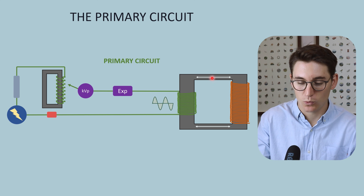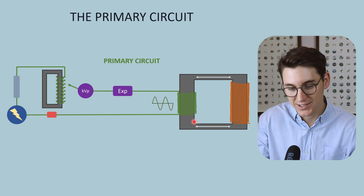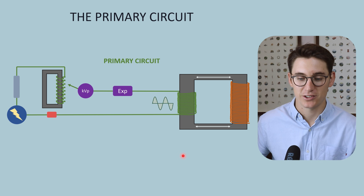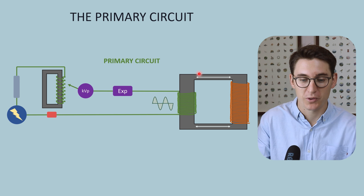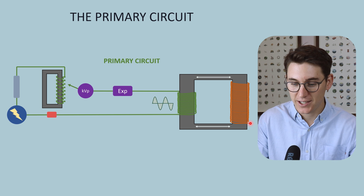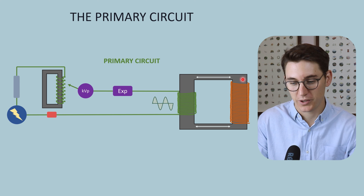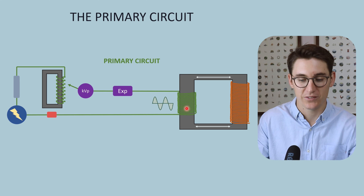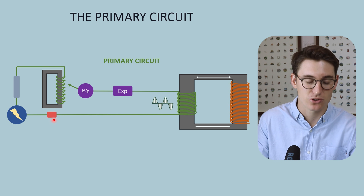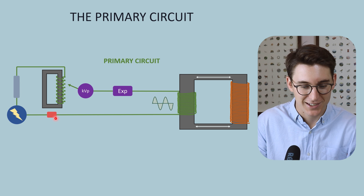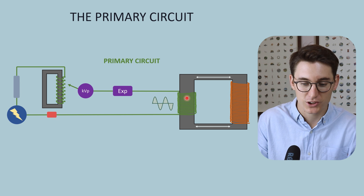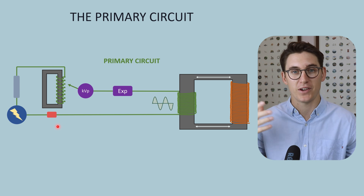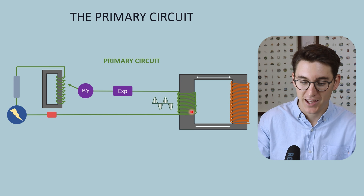The voltage then heads into the step-up transformer, which brings our low-voltage current up to high voltage. The first half of the step-up transformer forms part of the primary circuit and the second half forms part of the secondary circuit. Before leaving this image, I want to mention the circuit breaker — a safety mechanism that acts essentially as a fuse box, breaking the circuit if voltage is too high to prevent x-rays with energies that are dangerously elevated.